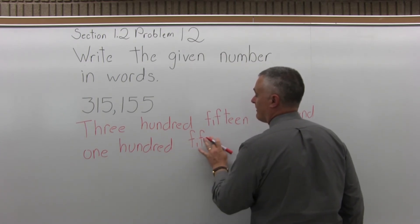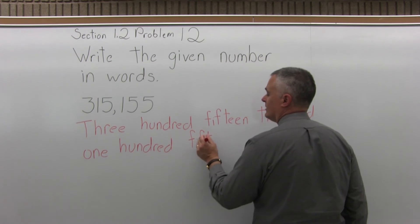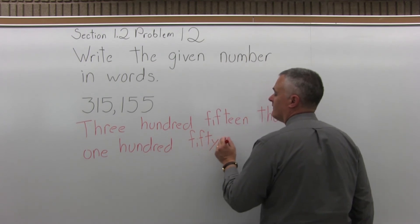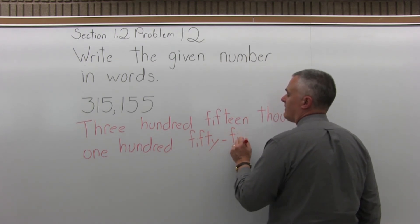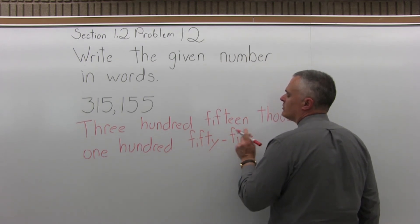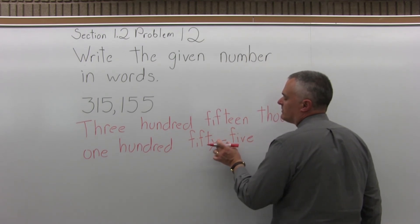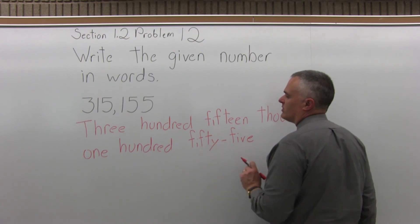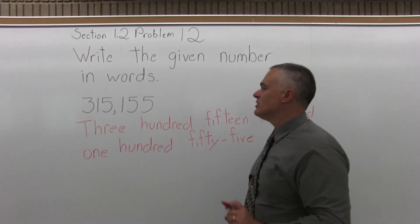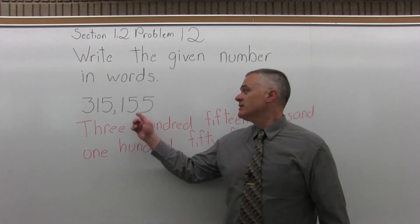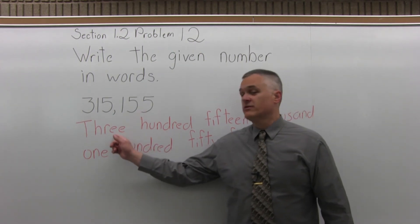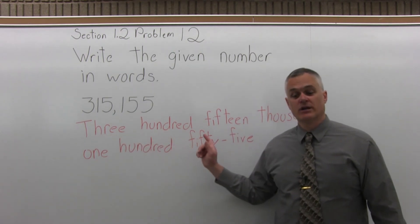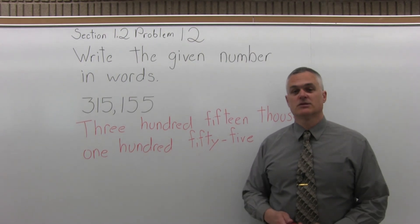I forgot my T. 155 — and again, to do a nice job, between the 50 and the 5 we can put a dash. So, 315,155 written in words.